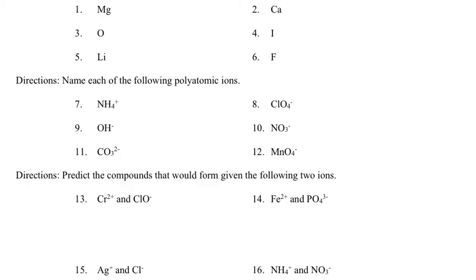On to the 3-4 worksheet — we'll start with the first couple sections, then spend a bit more time on the third section. Section 1 says to give the charge associated with each of the following. We just did this on the bottom part of the last worksheet, so we should be able to predict the charge based on which family an element is in. Magnesium is in family 2A; it has two valence electrons and likes to lose those, so it's got a plus 2 charge. Calcium is also in family 2A, so it also has a plus 2 charge.